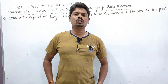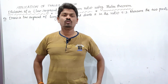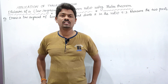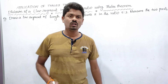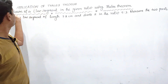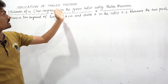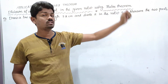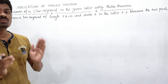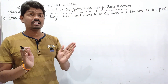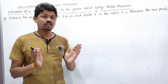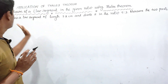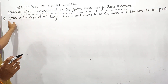Hello students, welcome to Learn More Math. Today we are going to learn about similar triangles part 4: application of Thales theorem, that is, division of a line segment in the given ratio using Thales theorem. So see, how can we divide a given line segment in the given ratio using Thales theorem?